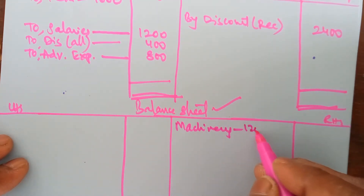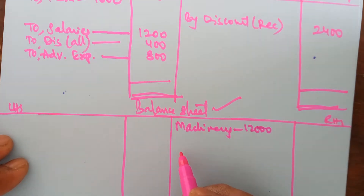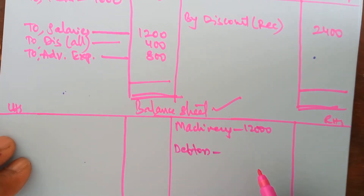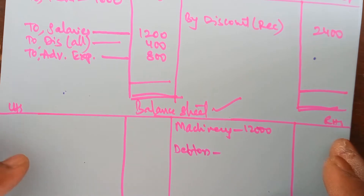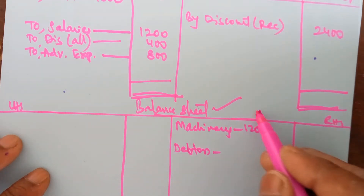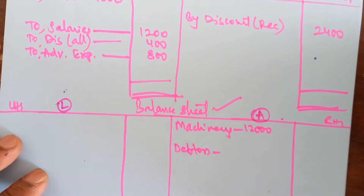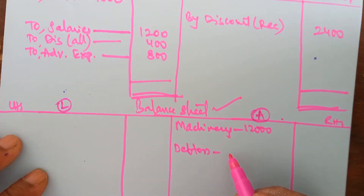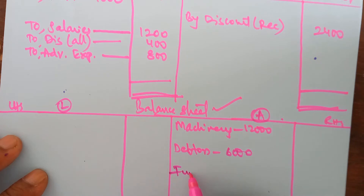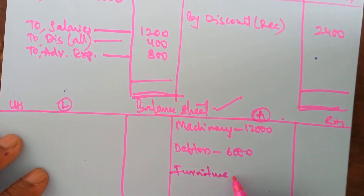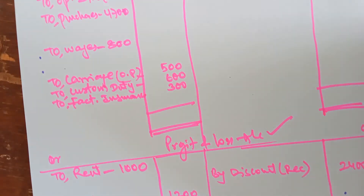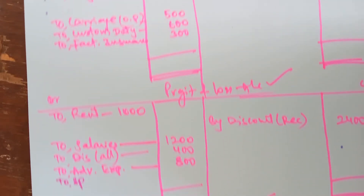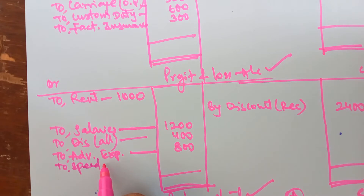Next is machinery. Machinery is an asset — it appears in the balance sheet. Machinery has an adjustment, so put the amount in the inner column and go ahead. The next item in the trial balance is debtors. Debtors are a group of individuals from whom the business is liable to receive money, therefore it becomes an asset. Debtors also have an adjustment — put the amount in the inner column. Next is furniture, which is also an asset appearing in the balance sheet. Furniture also has an adjustment — put the amount in the inner column.